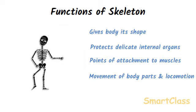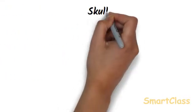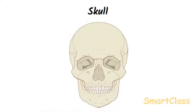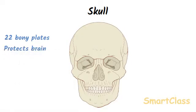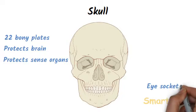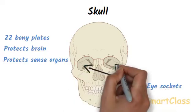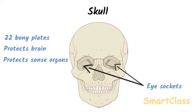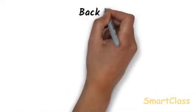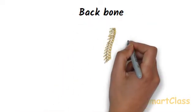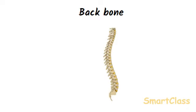Let us understand some parts of the human skeleton in more detail. Skull is made of 22 bony plates joined together. The bones of the skull form a strong case around the brain — in this way, skull protects the brain. The skull also protects the main sense organs like eyes, ears, and nose. The eyes are contained in two large cavities called eye sockets in the front of the skull.